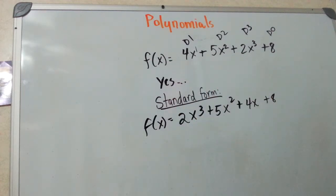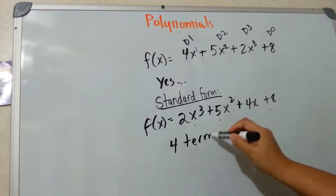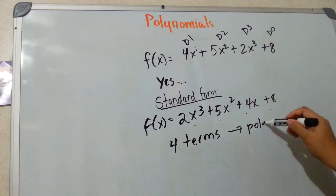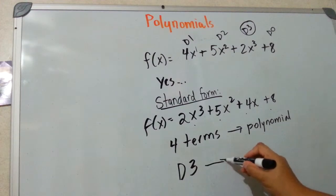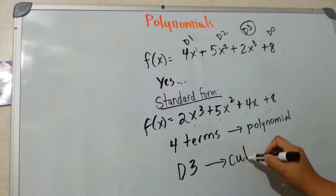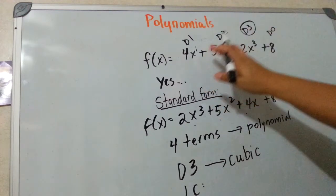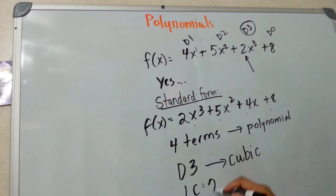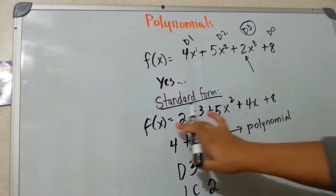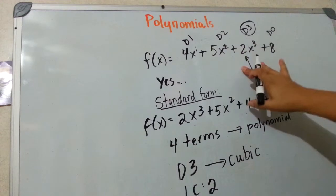Based upon the number of terms, what would you call this? Well, this has 1, 2, 3, 4 terms, so I would just call it a polynomial. What would be the degree? Degree 3 is highest, so this is a degree 3 polynomial. And what's the classification? Because it's degree 3, it would be cubic. What's the leading coefficient? The leading coefficient is the coefficient on the term with the highest degree. That coefficient is 2. When you write it in standard form, the leading coefficient is the first one. If it's not in standard form, you have to find the coefficient on the term with the highest degree.